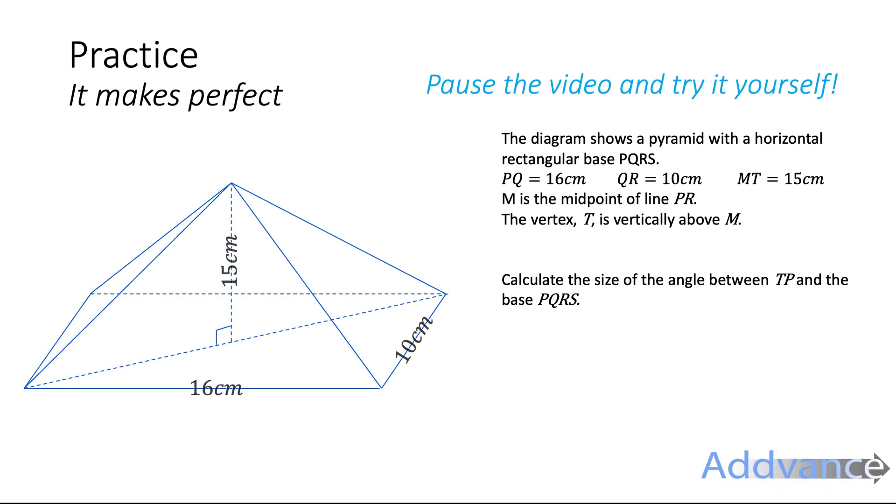I've got an exam question for you to try here. This diagram shows a pyramid with a horizontal rectangle base PQRS. PQ is 16cm, QR is 10cm, and MT, the height of the pyramid, is 15cm. M is the midpoint of the line PR. So M is halfway between the diagonals of the pyramid. The vertex T is vertically above M, so the vertex T is directly in the middle of the pyramid. Calculate the size of the angle between TP and the base PQRS. So you're after this angle here, between TP and the base. So it's this angle between the dotted line and TP.